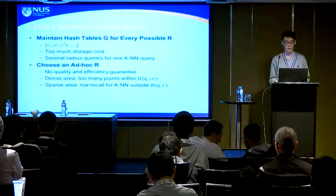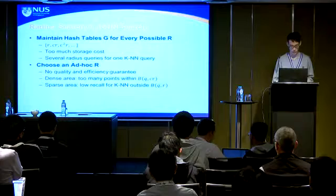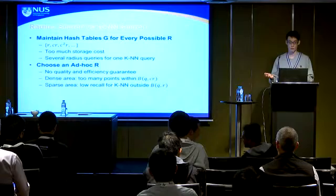Another approach is to choose an ad hoc radius, but this offers no quality or efficiency guarantee. In a dense area, there may be too many points within distance CR and the index will return too many points. In a sparse area, there may not be enough points within that distance.